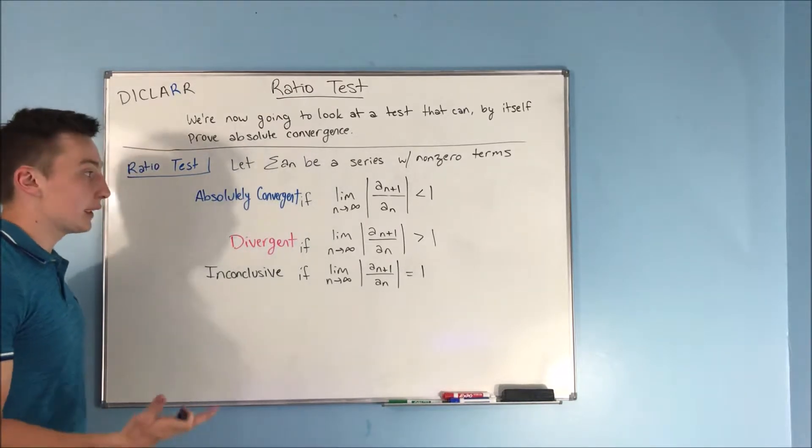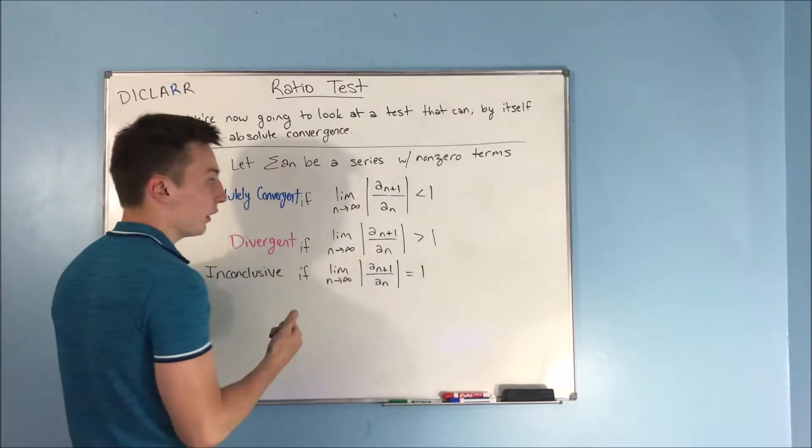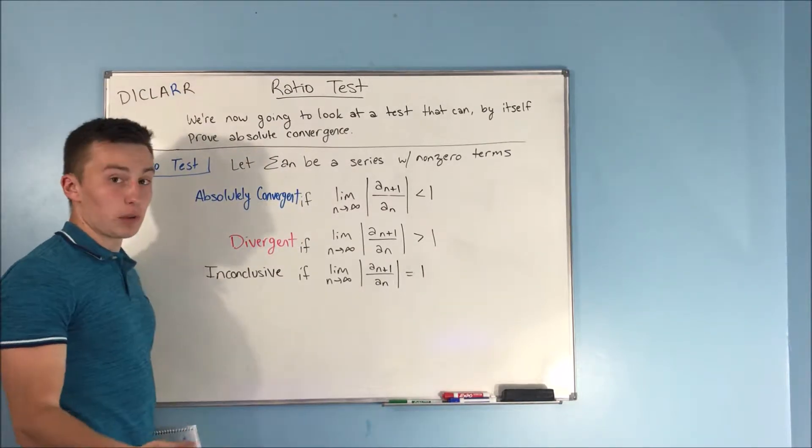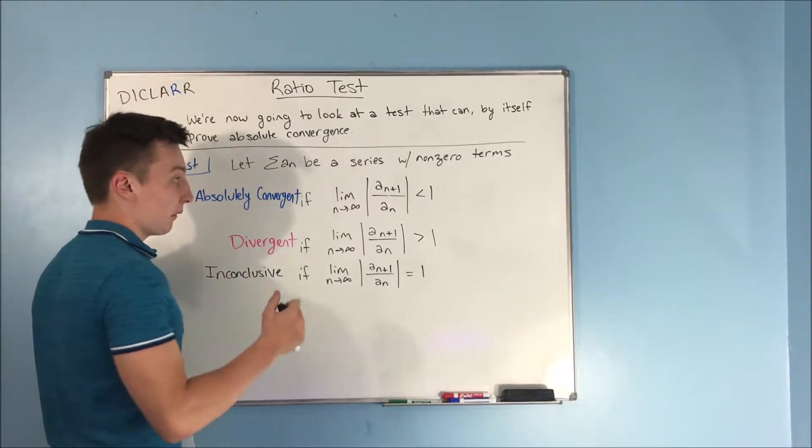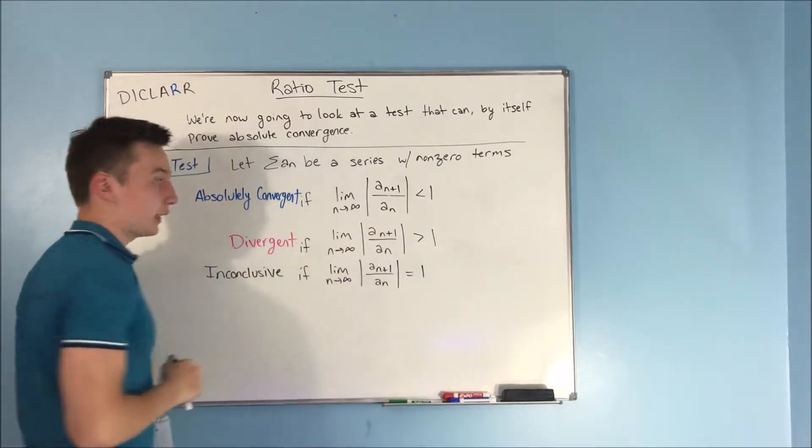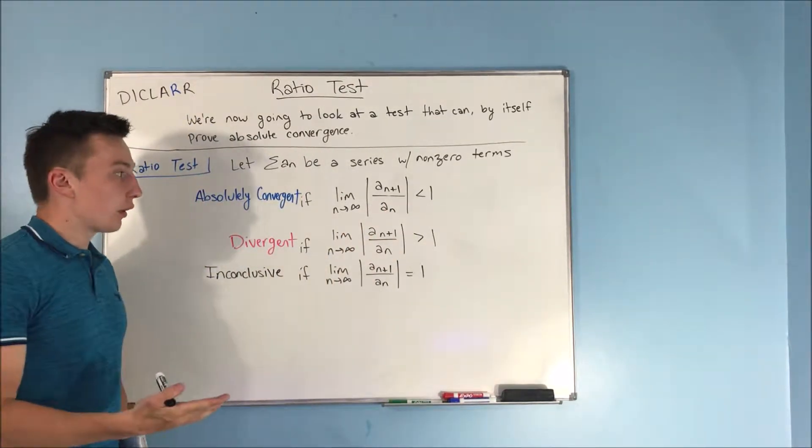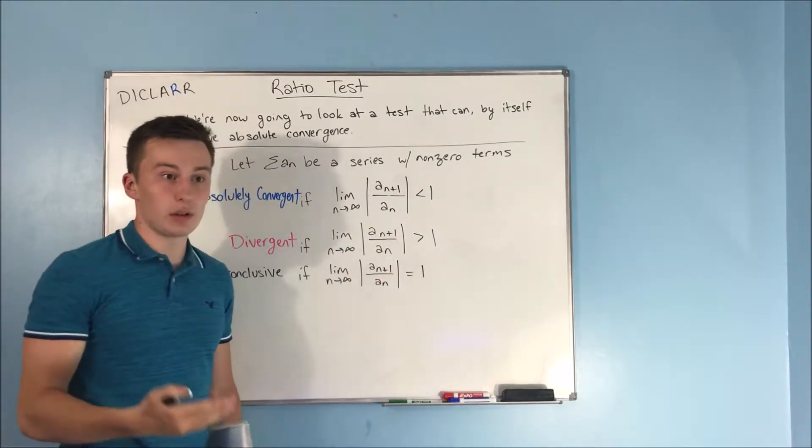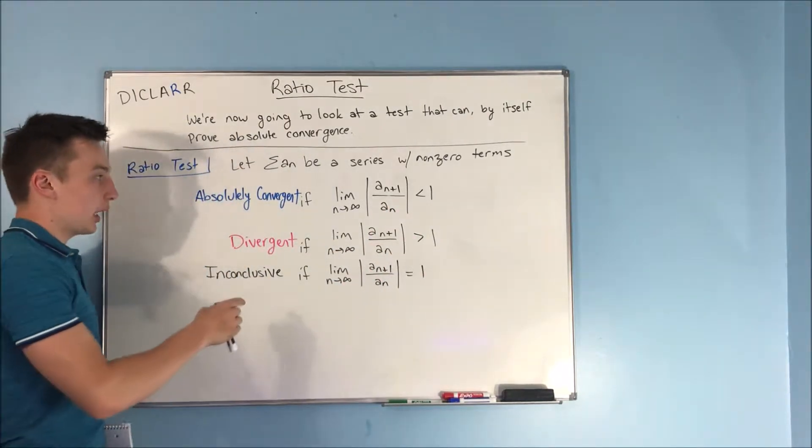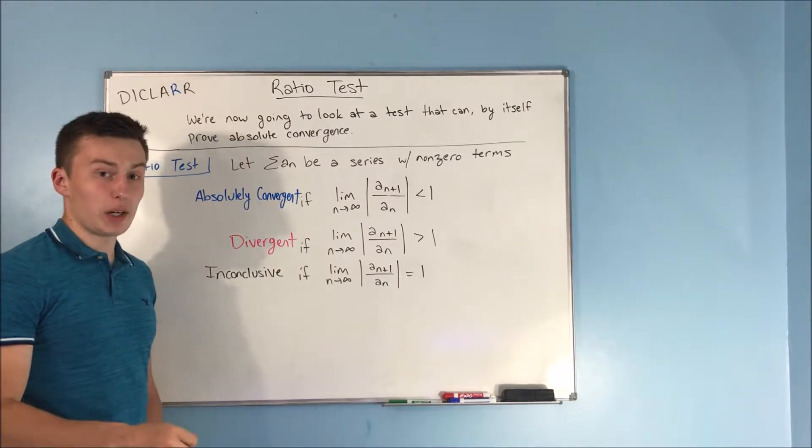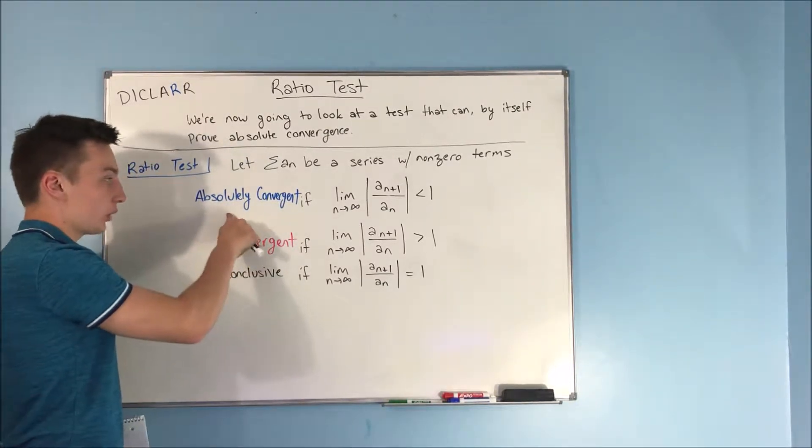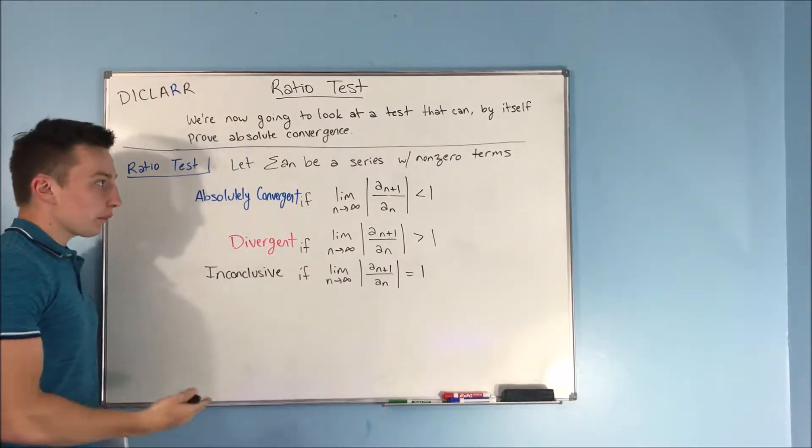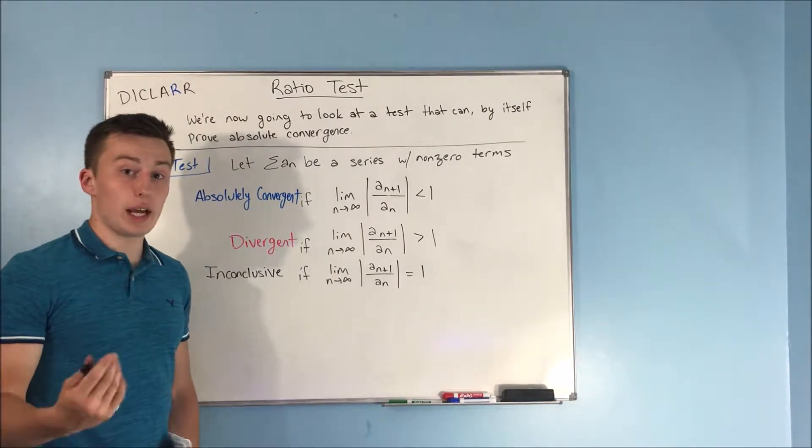So it's actually pretty simple. All you're taking is that limit. You're taking the absolute value of a sub n plus one, that's just plugging in n plus one for n, and putting it over your series a sub n. And if you see if it's less than one, greater than one, or equals one, you're pretty much able to tell. It's a little more rare that it's inconclusive. It's almost always one of these two. So really useful test, let's take a look at an example.